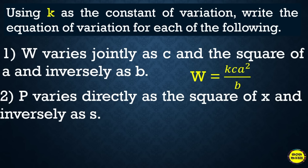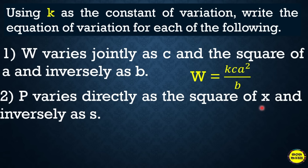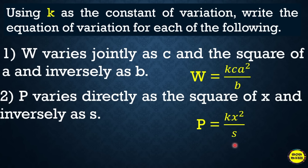Example 2: p varies directly as the square of x and inversely as s. Since it is directly — not jointly — as the square of x, we get kx² in the numerator. Since inversely as s, s goes in the denominator. So p = kx²/s.